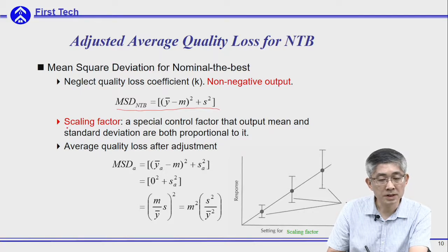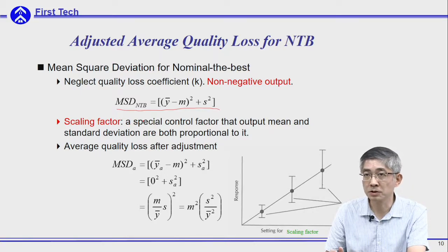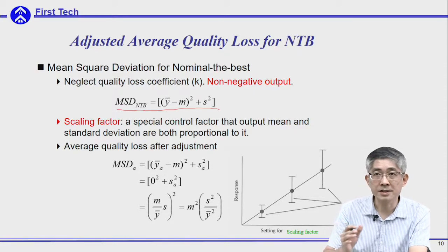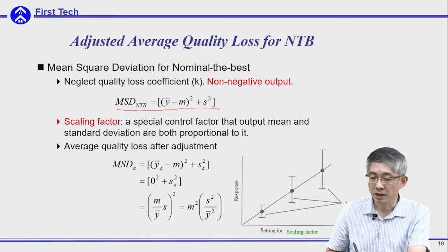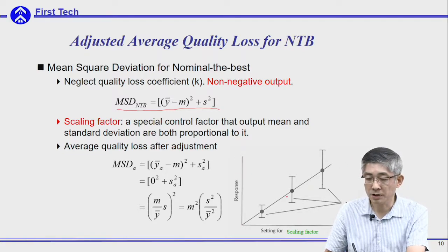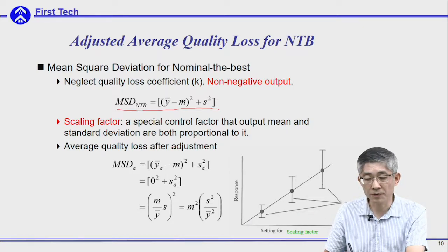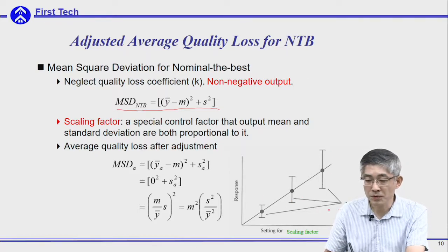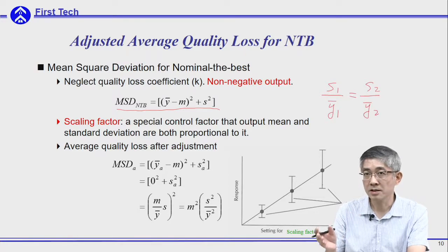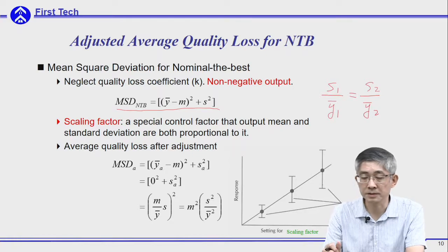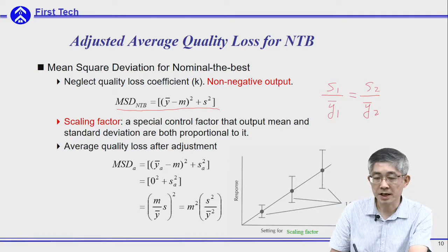Here we can understand the relationship between nominal-the-best average loss and the SN ratio. This is the mean square deviation for nominal-the-best. If you can find a special scaling factor — a control factor that affects the mean and standard deviation proportionally, as shown in the figure — then when you move the scaling factor, the standard deviation over mean output will stay constant. This is the characteristic of the scaling factor.